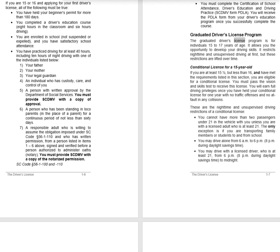The Graduated Driver's License Program is for individuals 15 to 17 years of age. It allows you the opportunity to develop your driving skills. It restricts nighttime and unsupervised driving at first, but these restrictions are lifted over time. Conditional License for a 15-year-old: If you are at least 15 and a half but less than 16, and have met the requirements listed in this section, you are eligible for a Conditional License. You must pass the Vision and Skills Test to receive this license. You will earn full driving privileges once you have held your Conditional License for one year with no traffic offenses and no at-fault collisions.